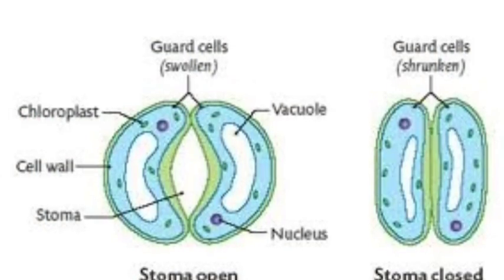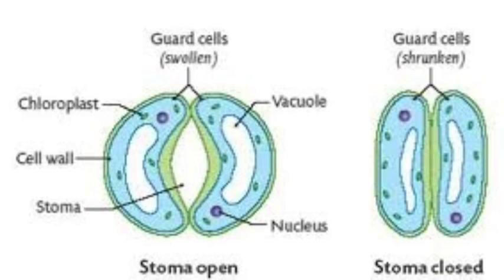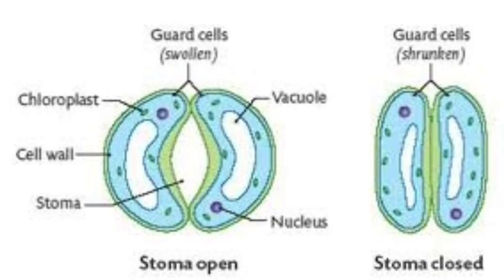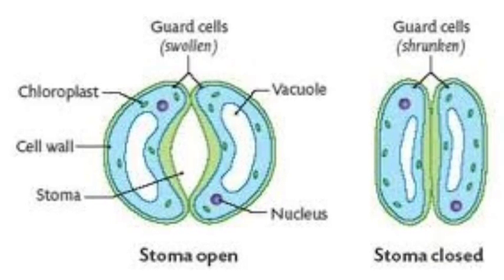The arrangement of macrofibrils in cell walls determine how cells can grow or change shape. For example, guard cell walls have arrangements of macrofibrils that result in the opening and closing of stomata as water moves in or out of the cell.